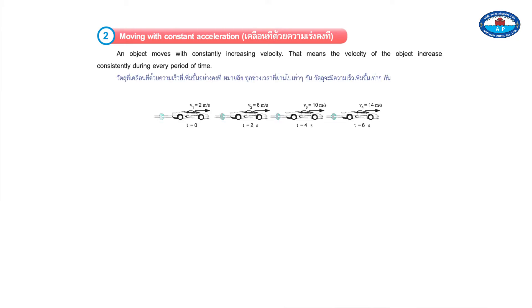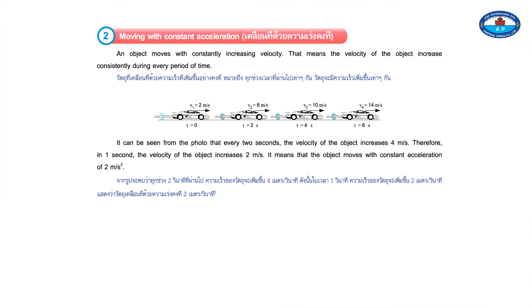Type 2: Moving with Constant Acceleration. An object moves with constantly increasing velocity. That means the velocity of the object increases consistently during every period of time. It can be seen from the photo that every two seconds the velocity of the object increases 4 meters per second. Therefore, in one second the velocity increases 2 meters per second, meaning the object moves with constant acceleration of 2 meters per second squared.